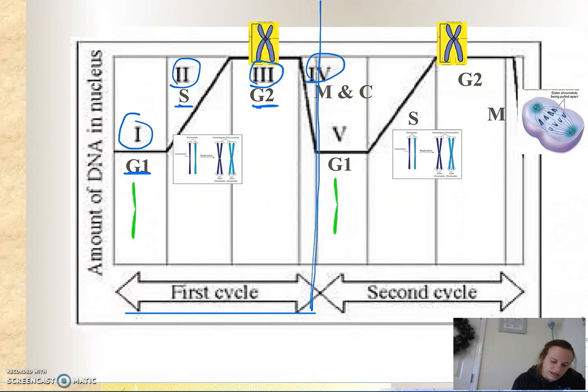Stage four here is mitosis and cytokinesis, which is also referred to together as the M phase. If we look at the amount of DNA in gap one, the amount of DNA is just in its chromatin form.